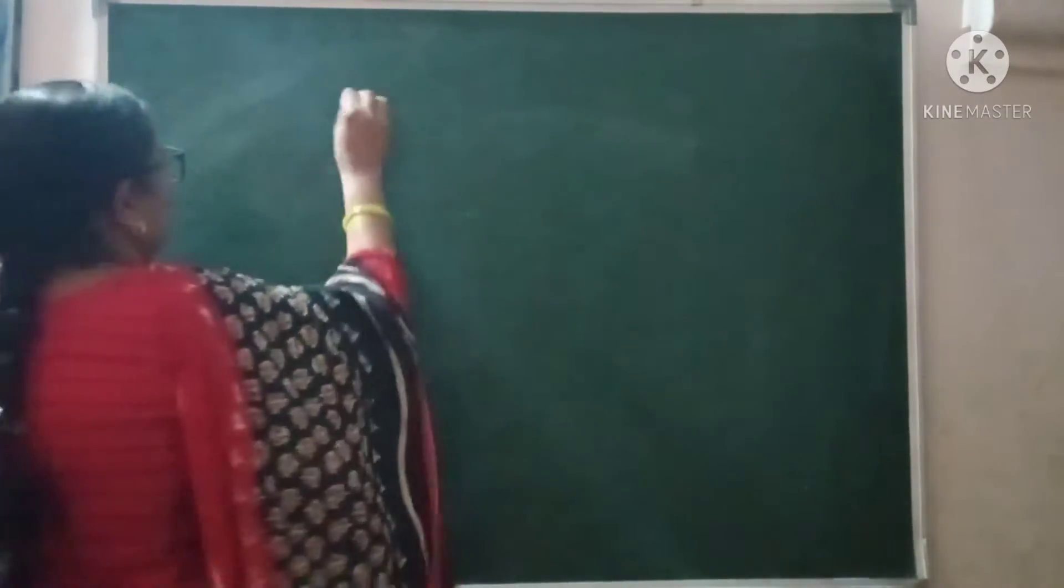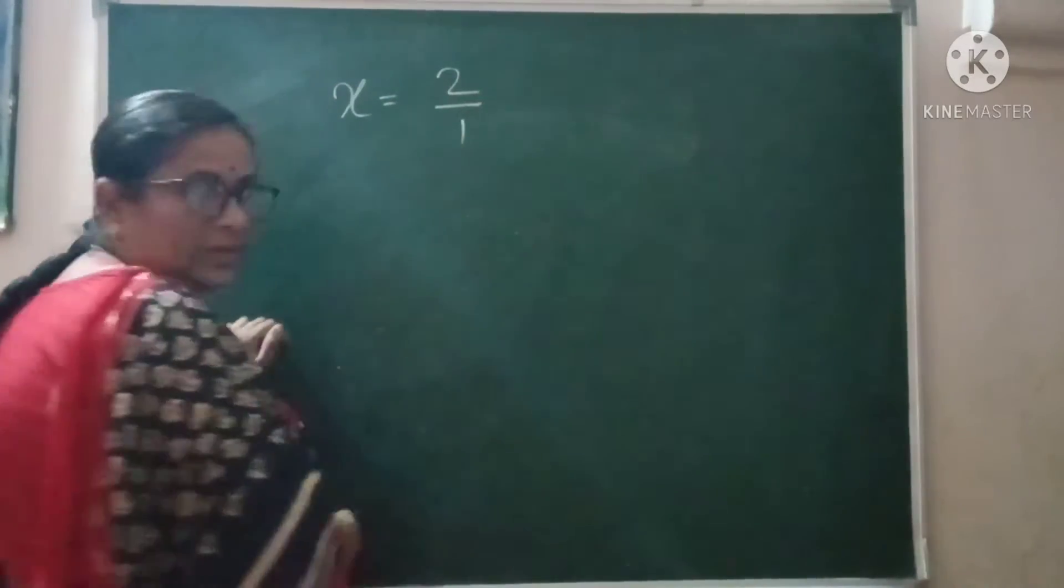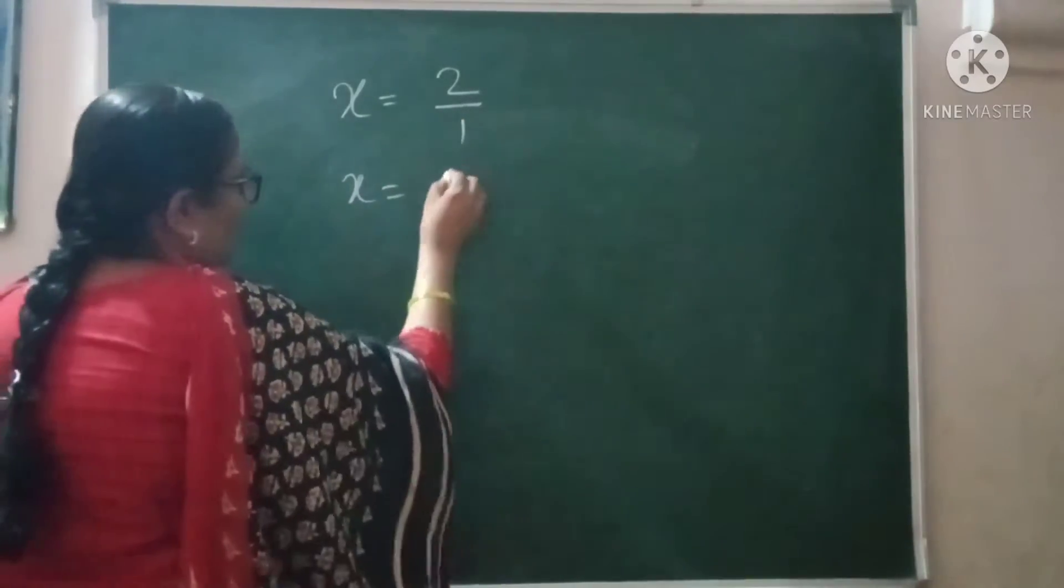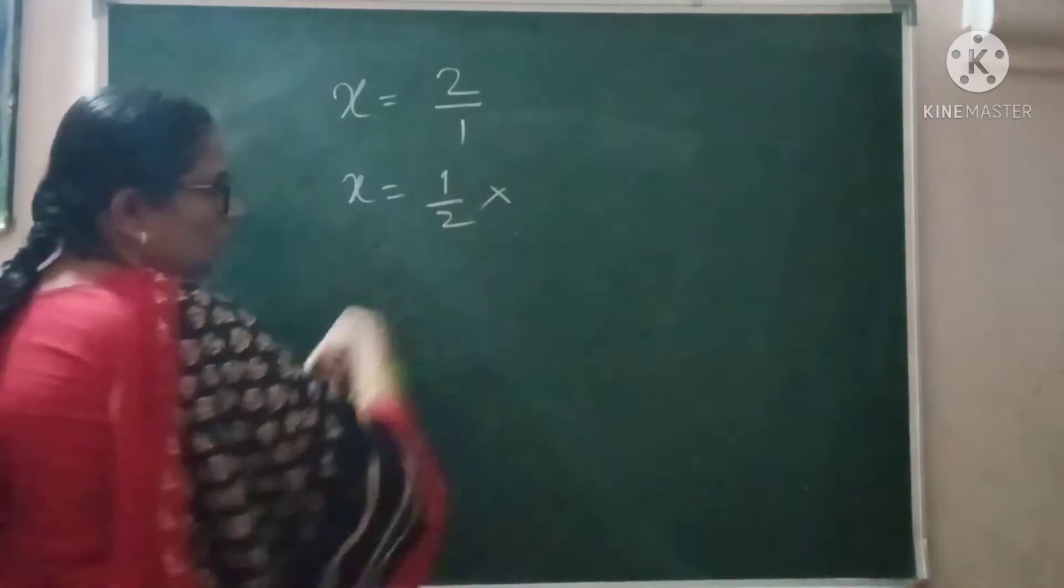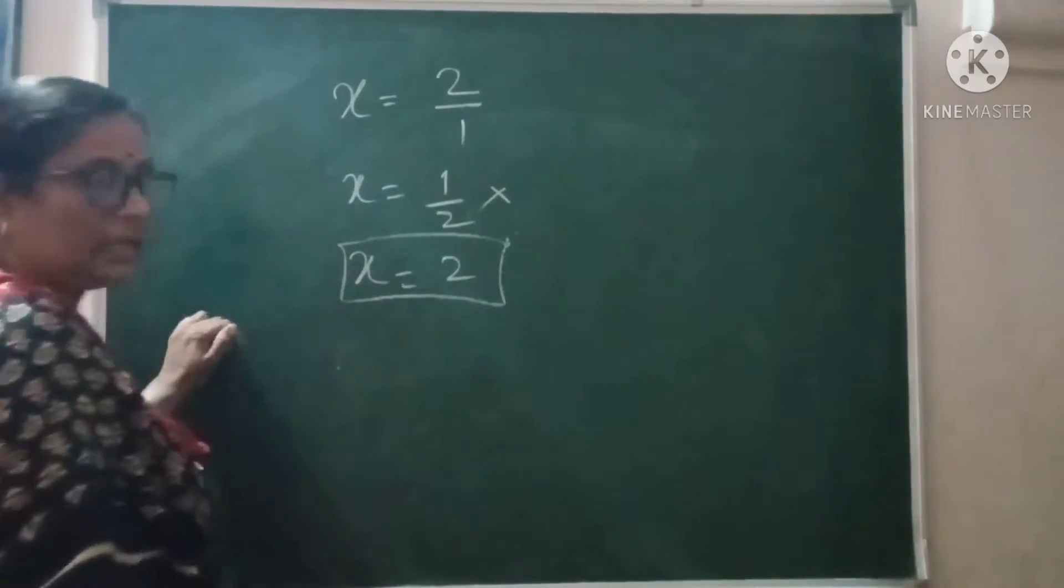First of all, most of the students, suppose if you have calculated the value of x, x is equal to 2 upon 1, something you get. Then you will get confused with some of the students. They write 2 upon 1 as 1 or 2 which is very wrong. 2 upon 1 is nothing but x is equal to only 2. Don't get confused.